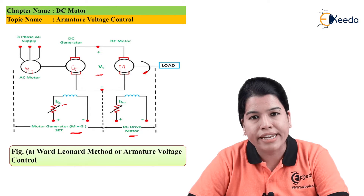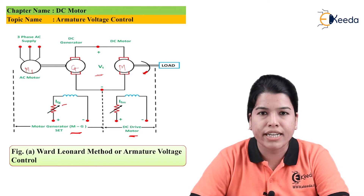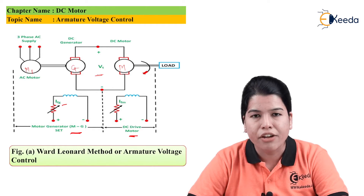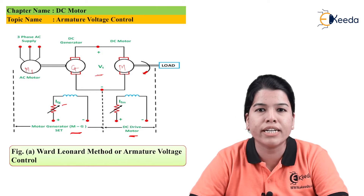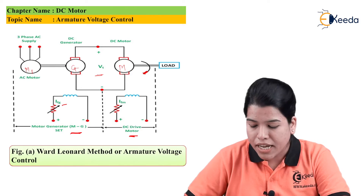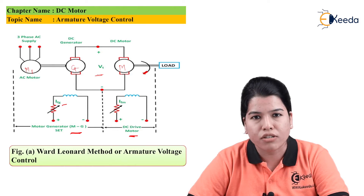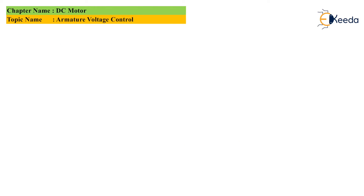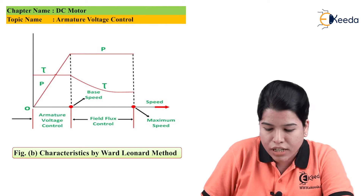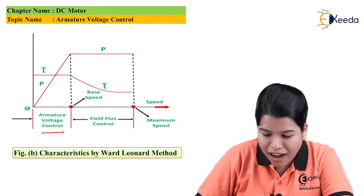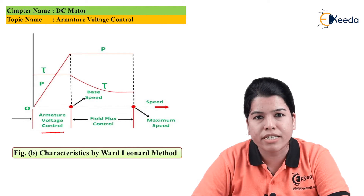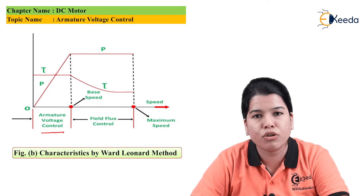Since speed is directly proportional to voltage, as the output voltage Vt varies from 0 to its rated value, the speed also varies from 0 to its rated value. In this way, we can control the speed from 0 to rated speed, i.e., below the rated speed. Since armature current Ia and flux are maintained constant, we obtain constant power and constant torque, as seen in the characteristic for the Ward-Leonard method.